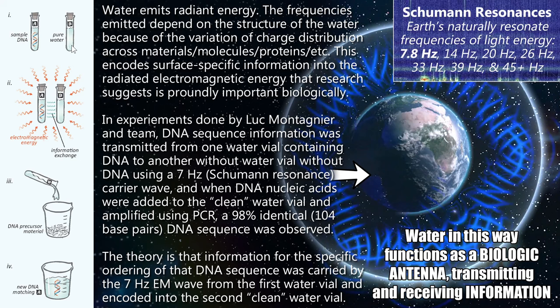They placed these vials within a mu-metal cage. Mu-metal is a type of metal that absorbs all electromagnetic energy and magnetic fields, even extremely low frequency ones — you can shield out Earth's magnetic field with it. Within that mu-metal box, they had a solenoid emitting a seven hertz wave as a carrier wave. They did that for about 16 to 24 hours, and there was some sort of information exchange that occurred.